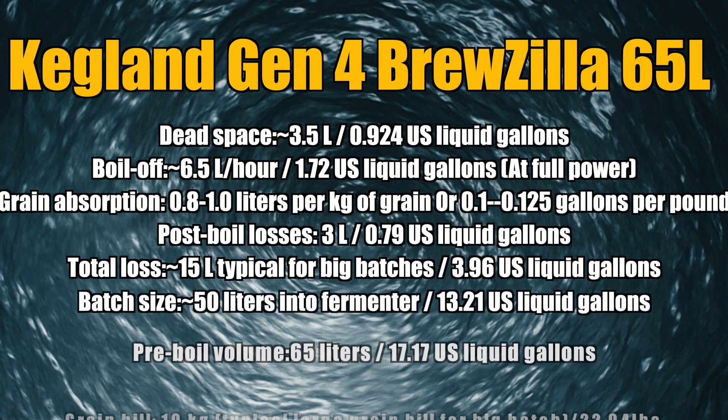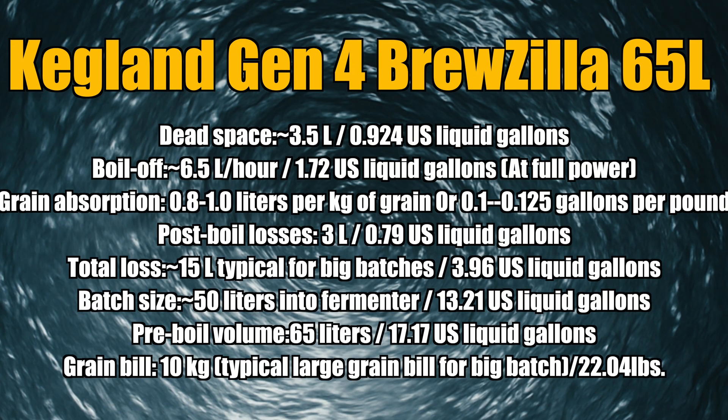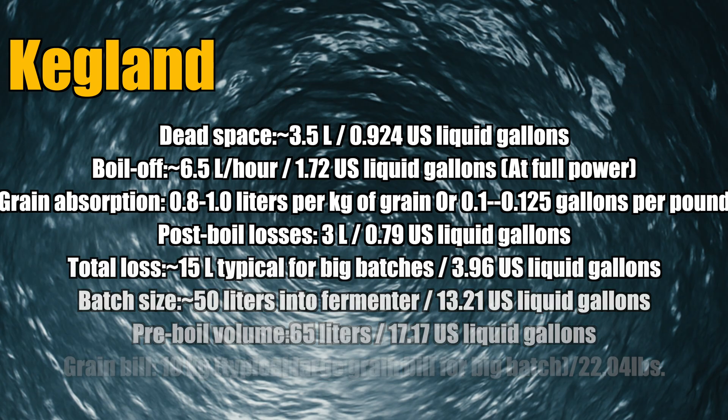Let's now look at a larger brewing system capable of brewing more than twice the G30's batch size — the Gen 4 Bruzilla 65 litre system. The Bruzilla has the exact same dead space as the G30. The boil off is higher because this system generates much more power to bring a larger batch up to temperature, though this can be adjusted as the system is also capable of small batch sizes. Grain absorption remains the same generic figure. The total losses are streamlined for a system of this size thanks to the brewing system's design, which focuses on minimising losses.